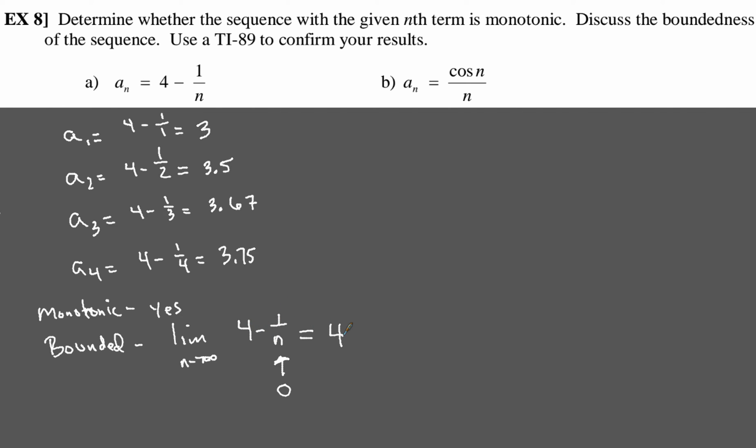Now, here's what you want to take a look at. Our first term is 3. Then we go to 3.5, 3.67, 3.75. So 4 is above all of those, so our sequence is going to be bounded above by 4. So this is one sequence that does get bounded above, and it's bounded above at 4.